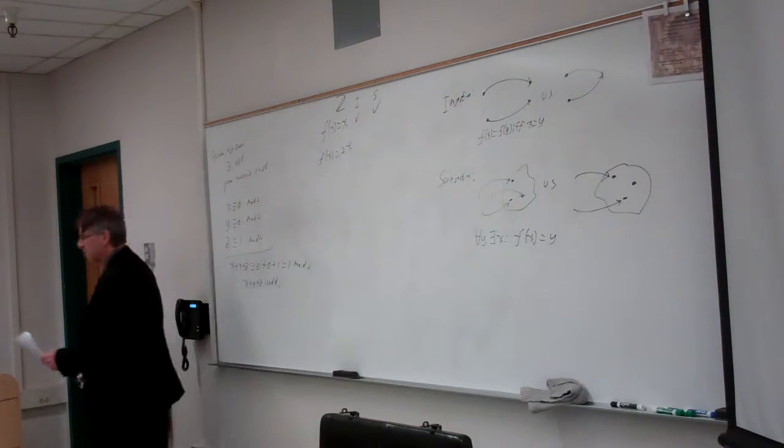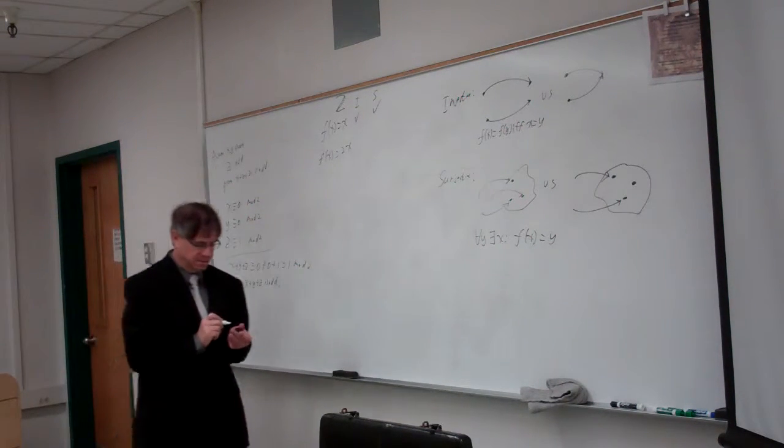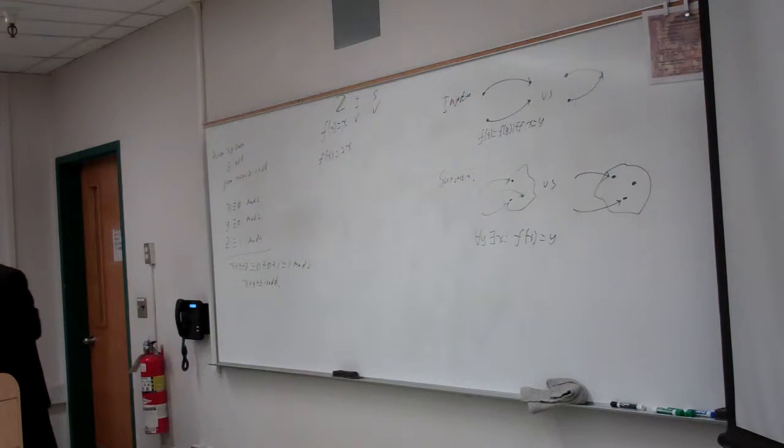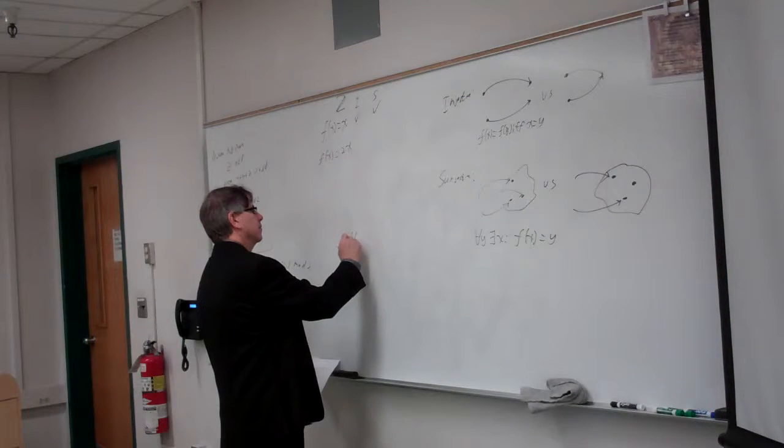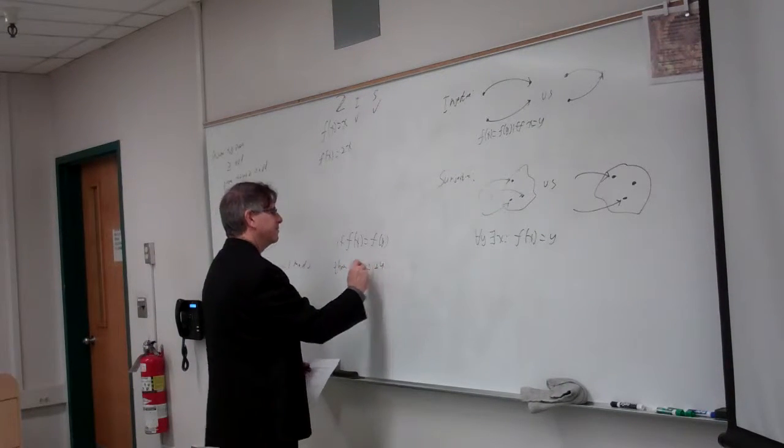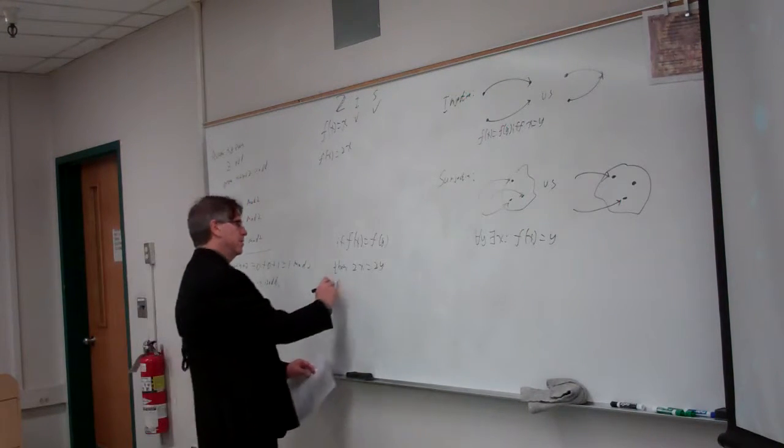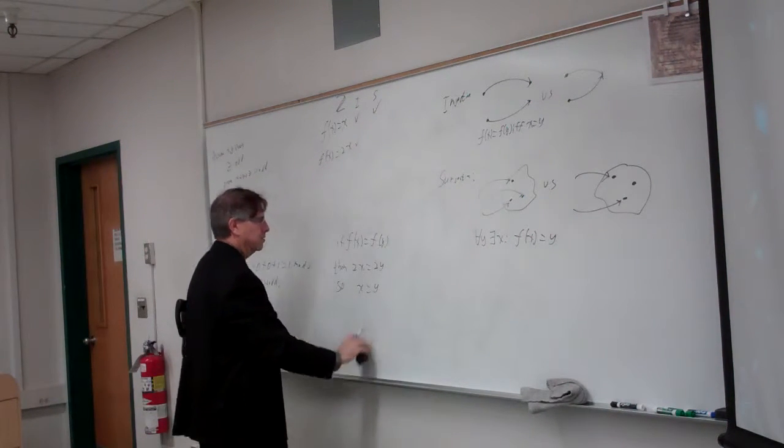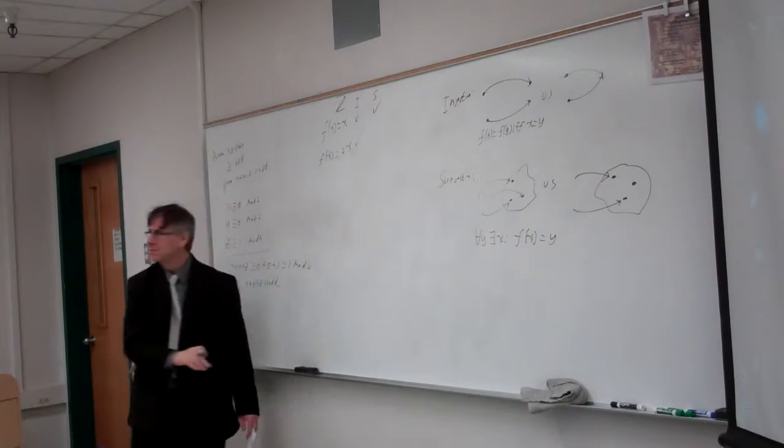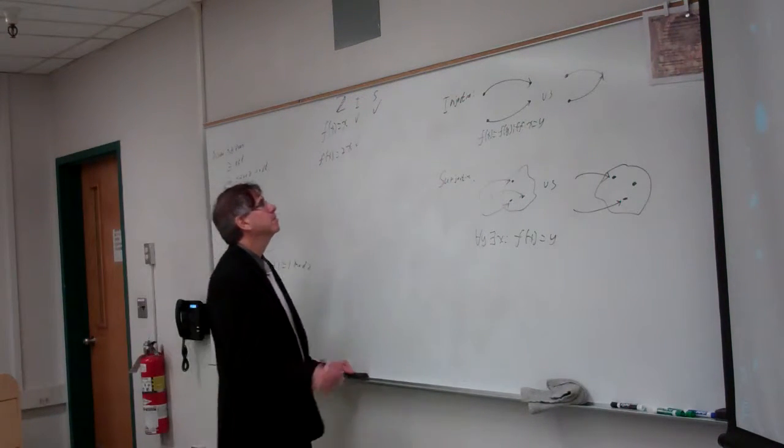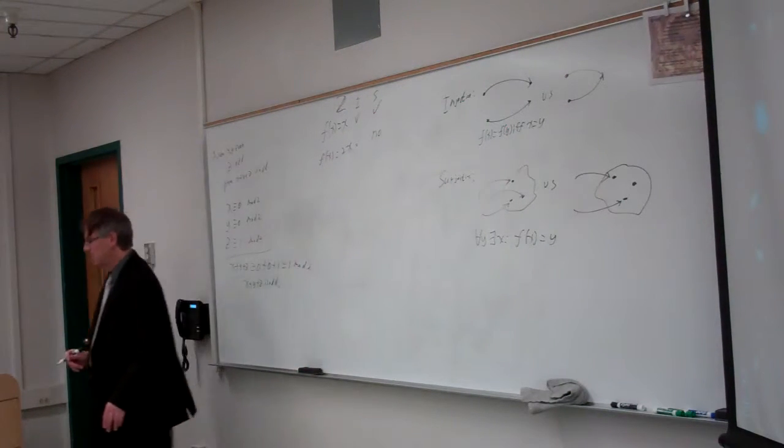How about f of x equals 2x? So does that take distinct points to distinct points? If f of x equals f of y, then 2x must equal 2y. And so x is equal to y. So that's the definition of injectiveness. Is it surjective? If it's a point that's not mapped to 3. There's no x such that f of x equals 3. Because we're working over integers. So that's an exception.